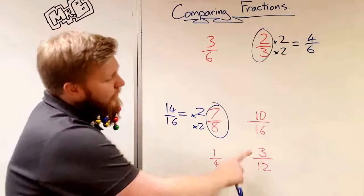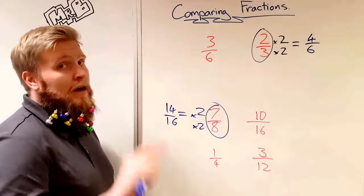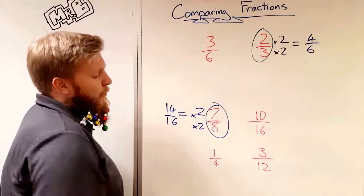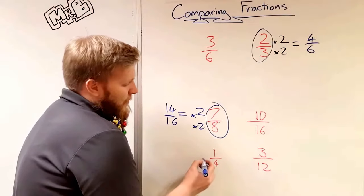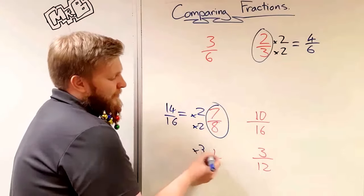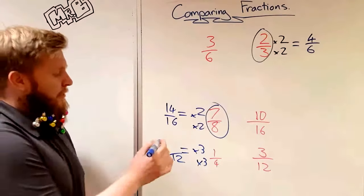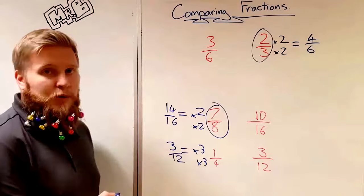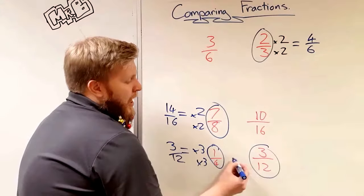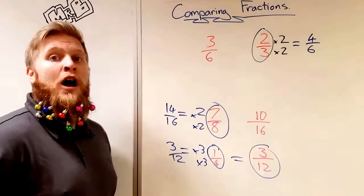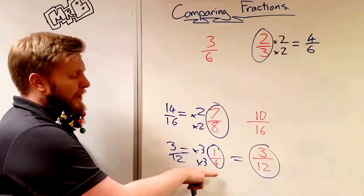Last little example here. You've got one-quarter and three-twelfths. We want to know which one's bigger. Now again, I know my four times table. I know four times three is twelve. So I'm going to times by three, but I have to do the same at the top and the bottom. So I know I've got twelve on the bottom, and I have to times the top by three, and I've got three-twelfths. Now I can see that one-quarter and three-twelfths are the same. They are equivalent fractions, because when I times the top by three and the bottom by three, I get three-twelfths.